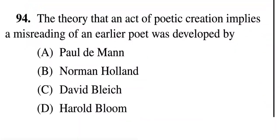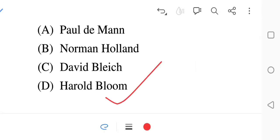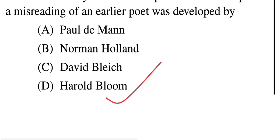Question 94: The theory that an act of poetic creation implies a misreading of an earlier poet was developed by whom? Options: A — Paul de Man, B — Norman Holland, C — David Bleich, D — Harold Bloom. The correct answer is D — Harold Bloom. All of these are very celebrated names — you must know them.